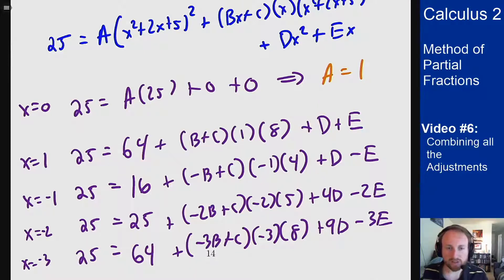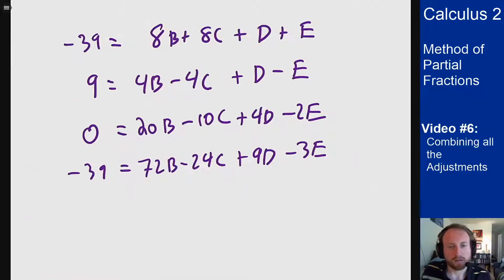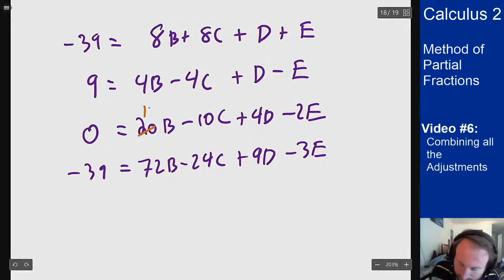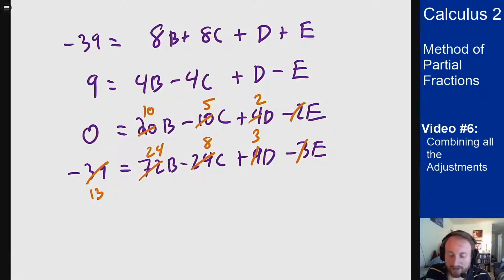Collecting all equations and moving constants to the left, this is where these problems get hard — solving the system for four variables B, C, D, E. We divide the third equation by 2 and the fourth by 3 to simplify. Then we eliminate E by adding and subtracting equations appropriately.